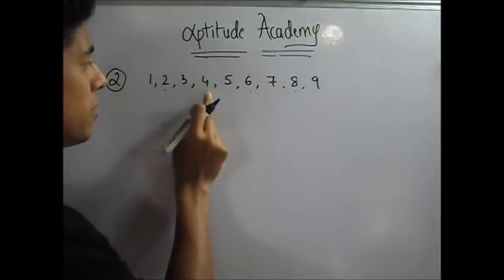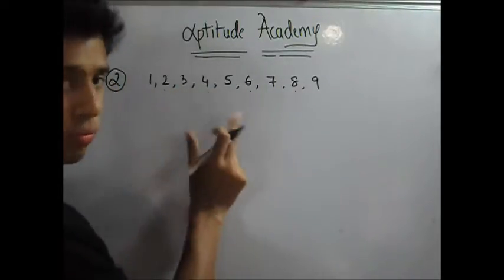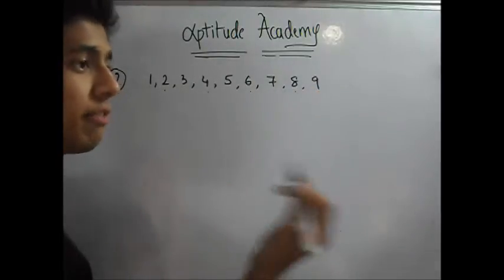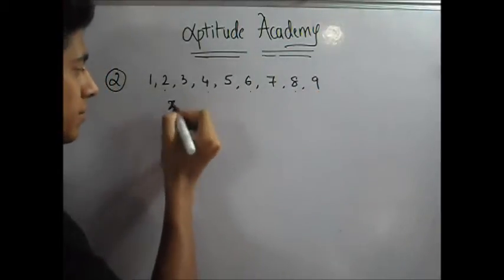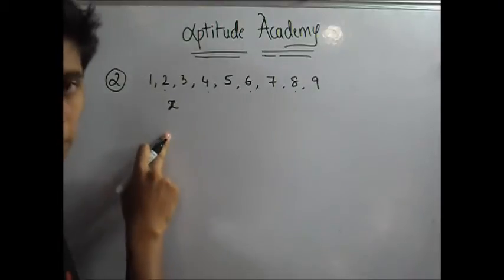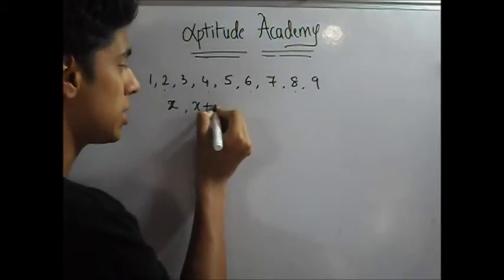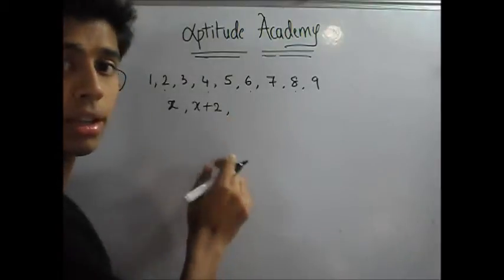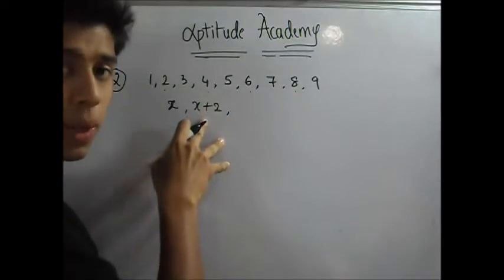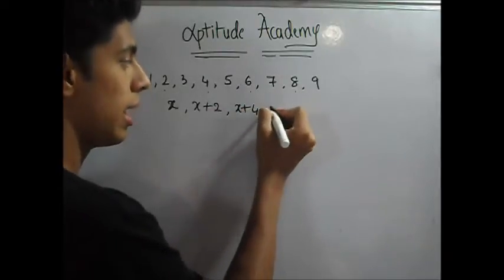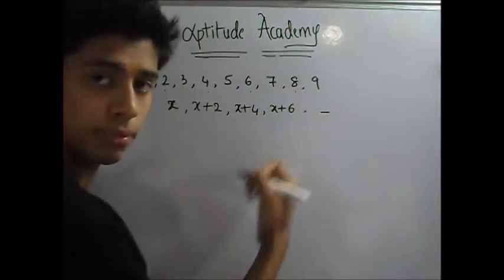Now you notice that the difference between any two consecutive even numbers is 2. 2 plus 2 is 4, 4 plus 2 is 6, 6 plus 2 is 8. Let us assign the first consecutive even number as x. Now if I had x as the first even number, how would I get to the next even number? I would add 2. So your next number will be x plus 2. For the next even number, you need to add 2 to the previous one. So x plus 2 plus 2, that is x plus 4, x plus 6, and so on.